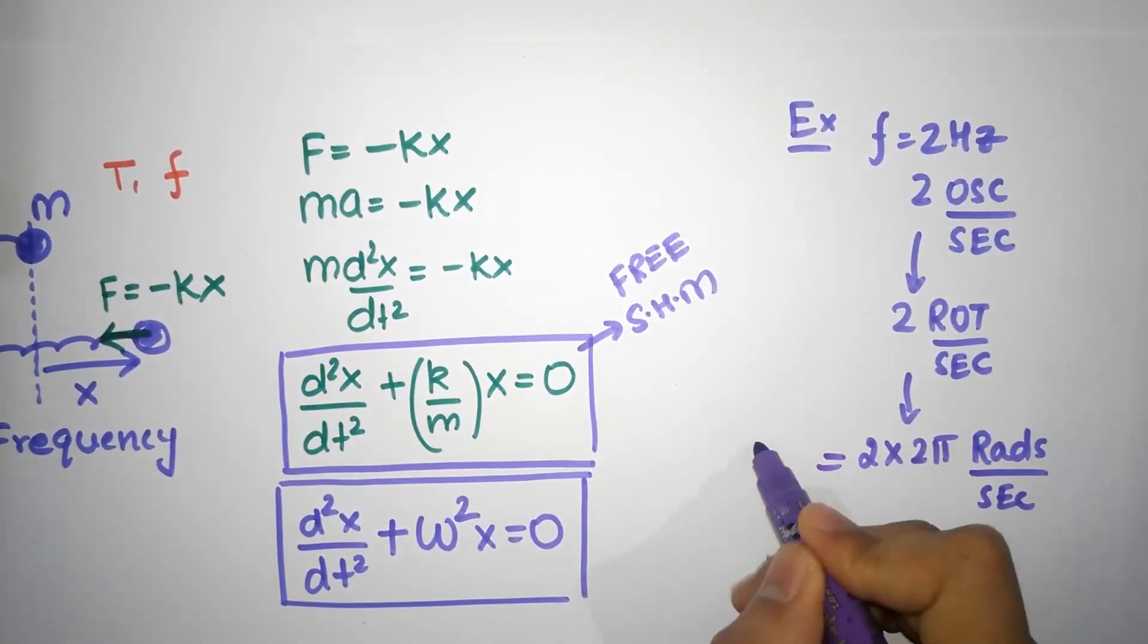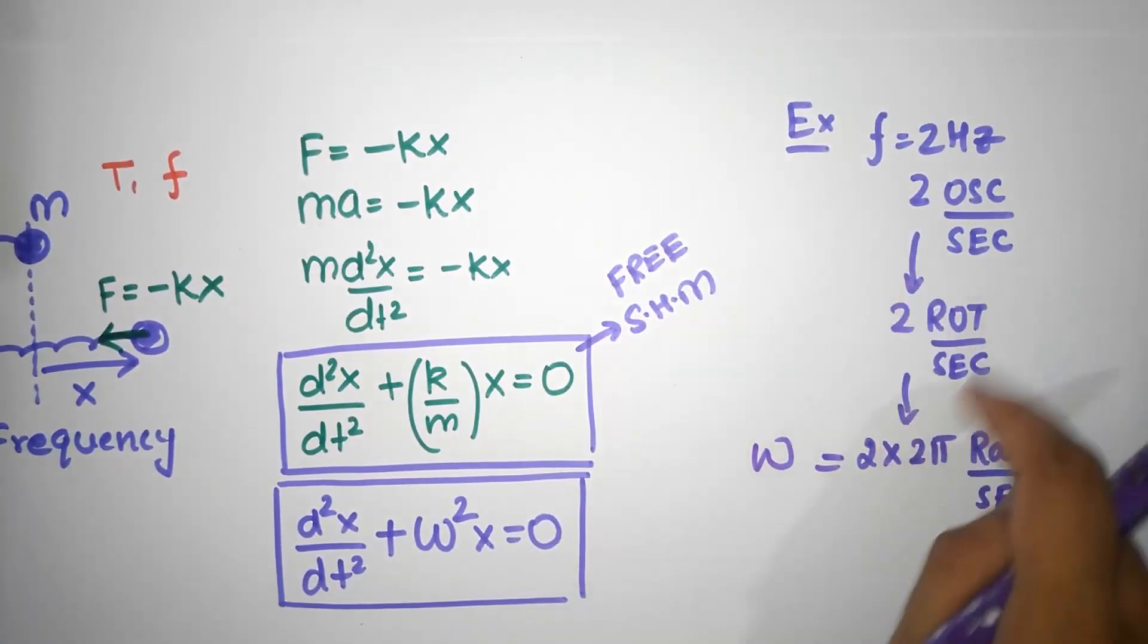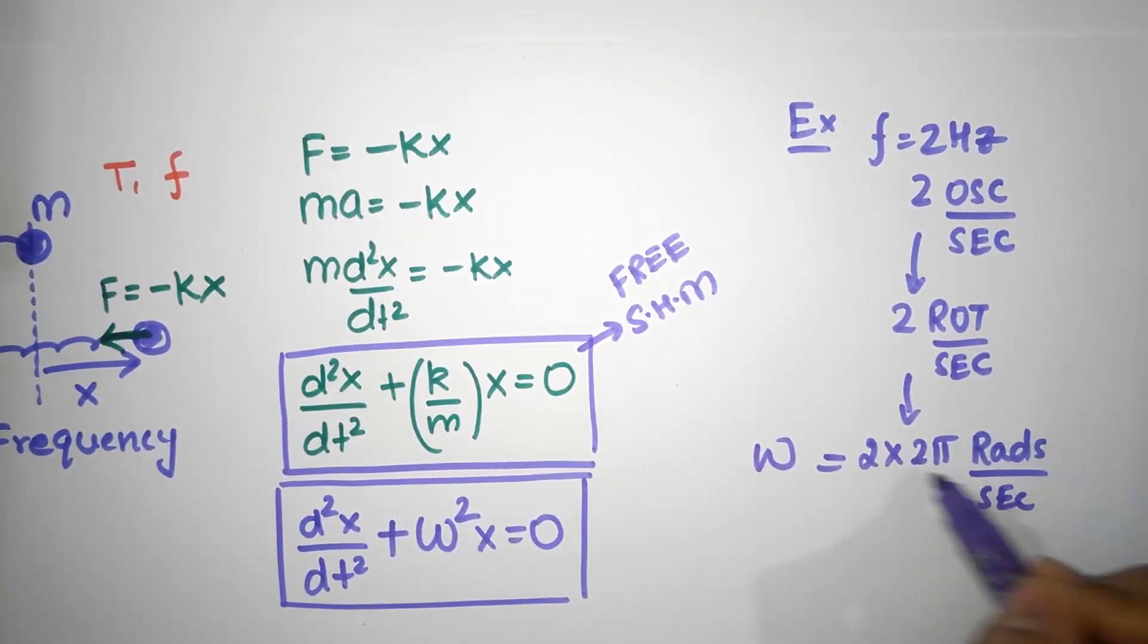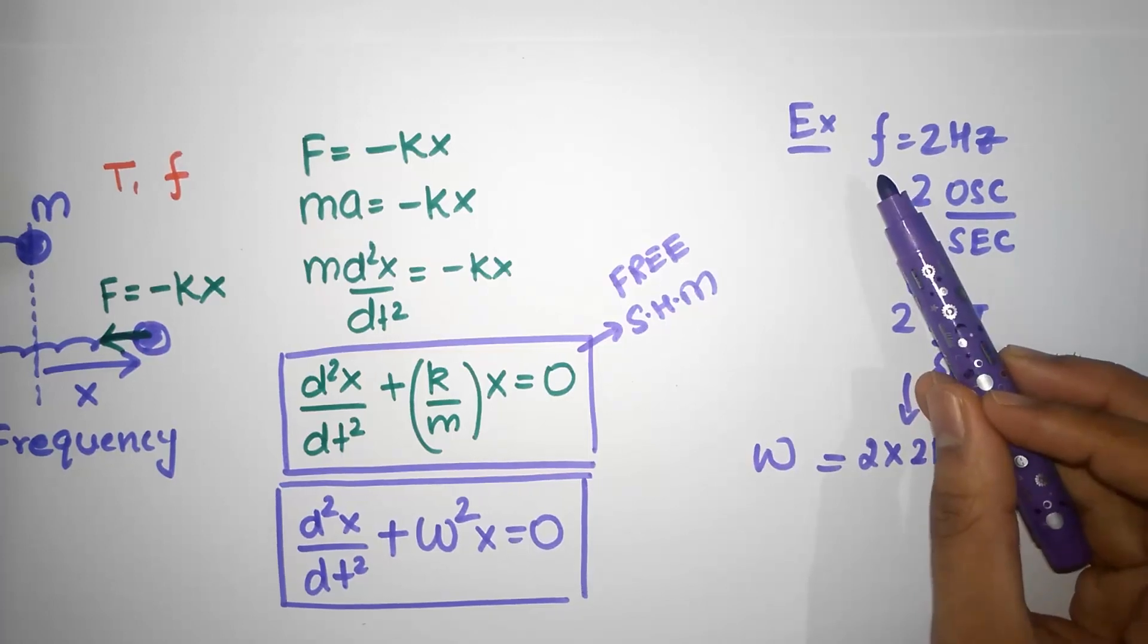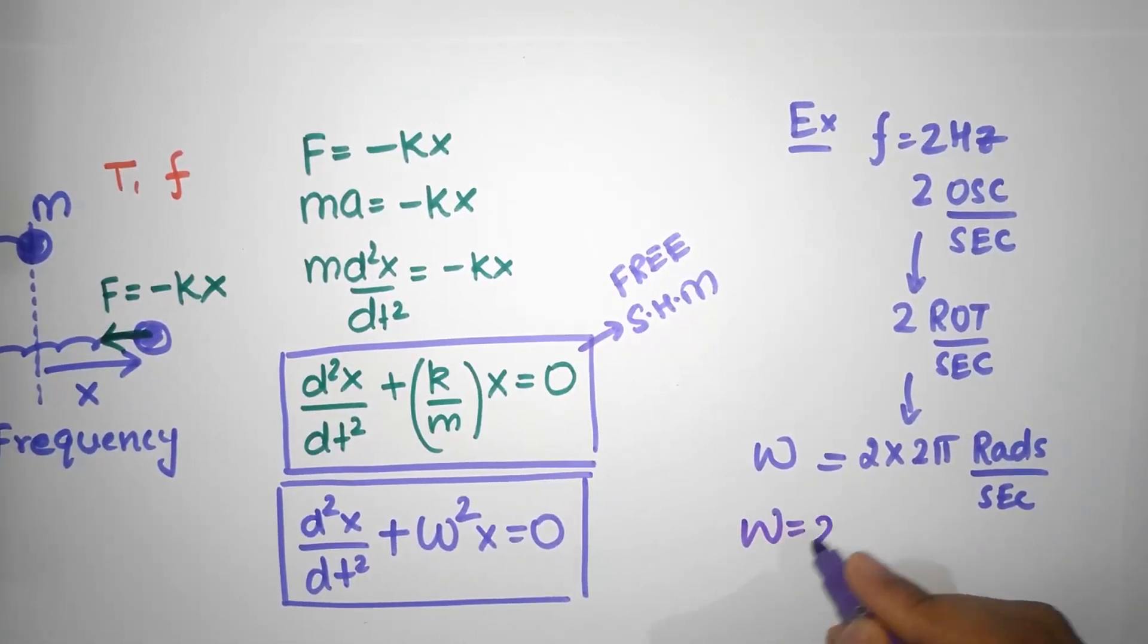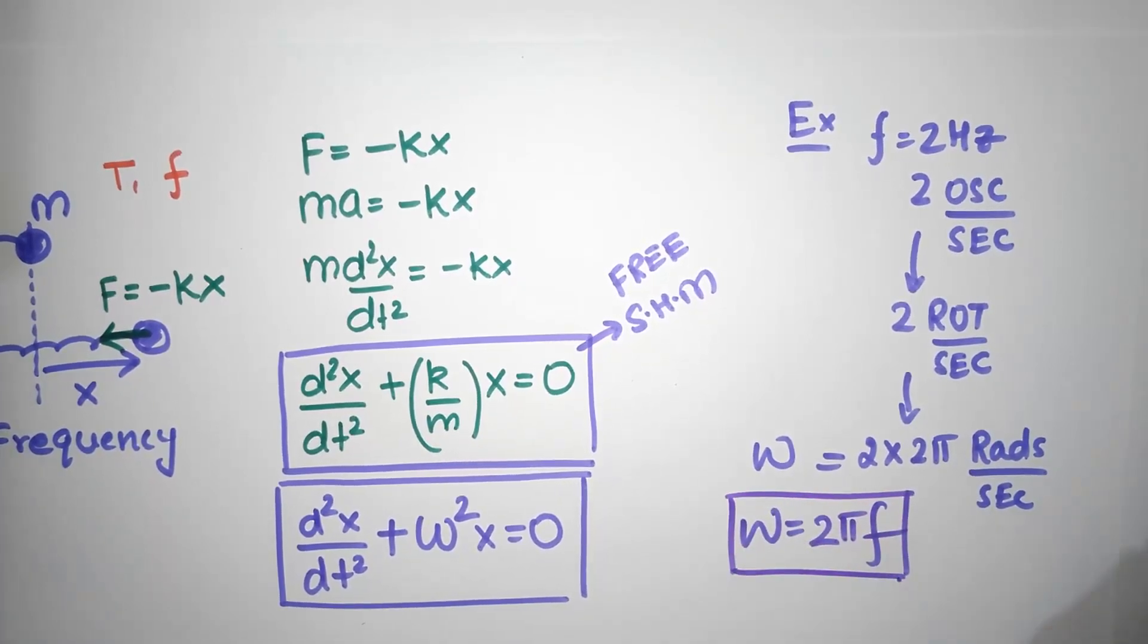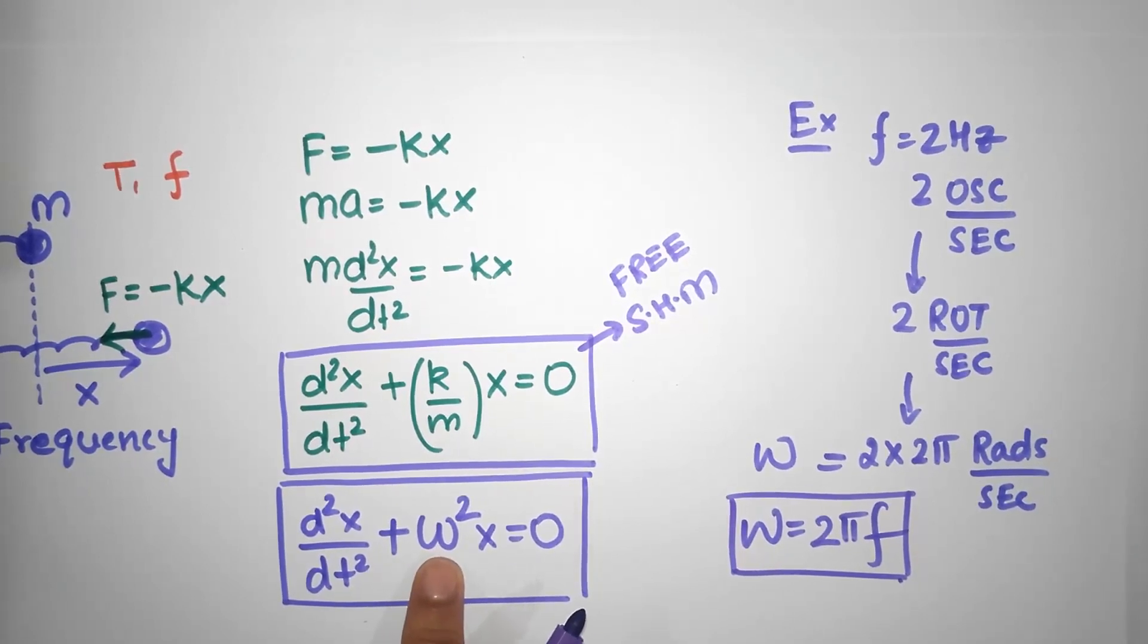And that is what omega is. Omega is how many radians per second if it was rotating. So, notice, to calculate radians per second, you just have to multiply 2 pi with the frequency. If something is having 10 oscillations per second, you can think of it as 10 rotations per second, and it becomes 10 times 2 pi radians per second. So, omega is always going to be 2 pi times f. That's going to be the angular frequency. And that angular frequency is over here in this differential equation.